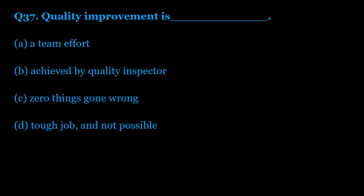Question number 37: Quality improvement is — Option A: a team effort. Option B: achieved by quality inspector. Option C: zero things gone wrong. Option D: tough job and not possible. The correct answer is Option B — quality improvement is achieved by quality inspector.